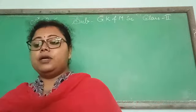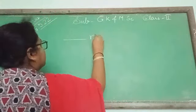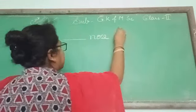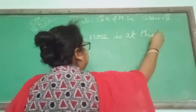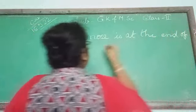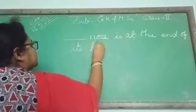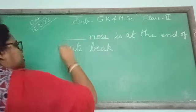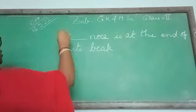Now come to fill in the blanks. If it is written: dash, dash, nose is at the end of its beak - you have just learned whose nose is at the end of the beak. You can write kiwi.